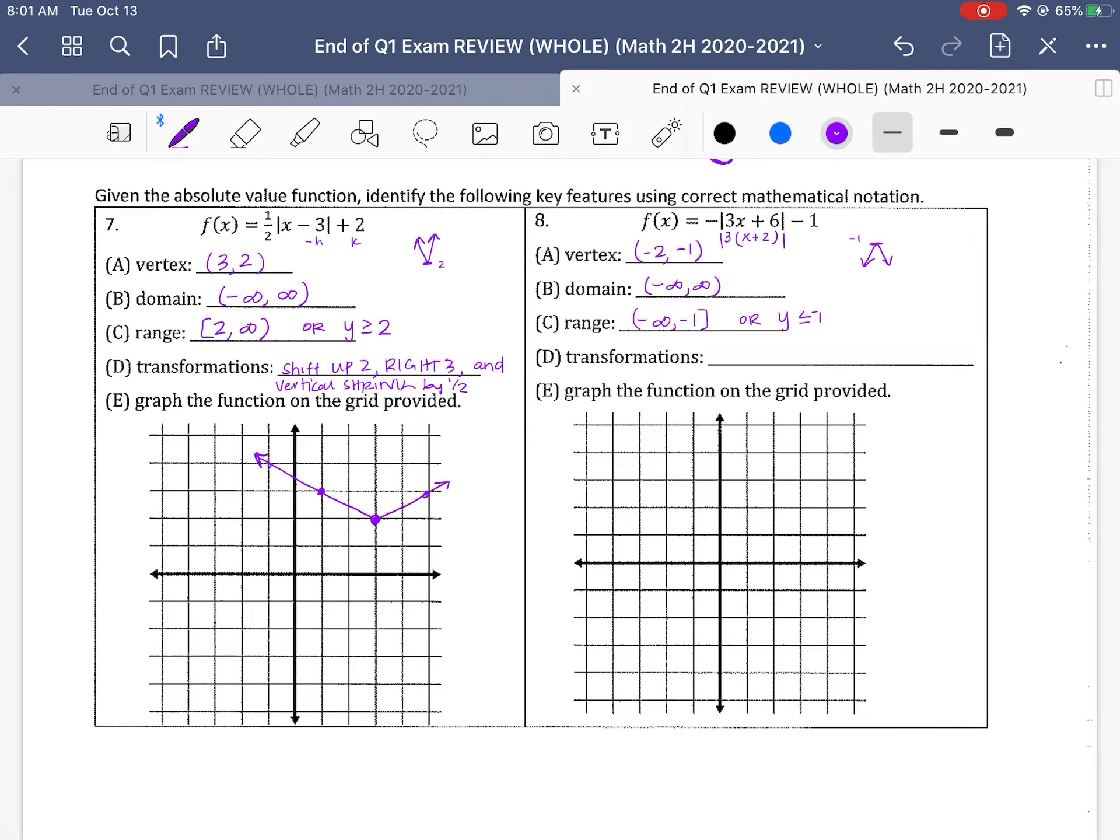Transformations. Again, this guy, he's going to reflect, right, over the x-axis. So we need to know that he's opening down. He's then going to shift down 1 and left 6. And then, right, he's going to horizontally shrink by 1 third.